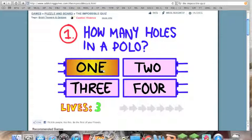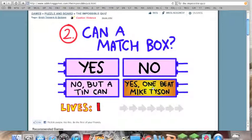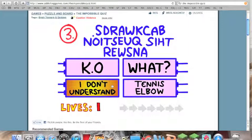How many holes in polo? Four. Four? Can a match box? No, but a tin can. But a tin can. Okay. Kale.